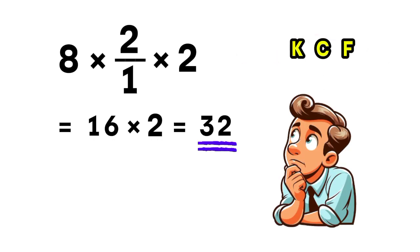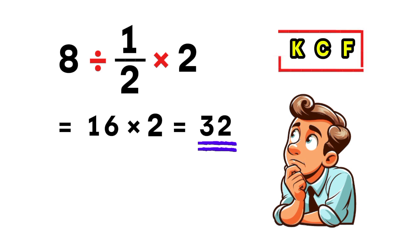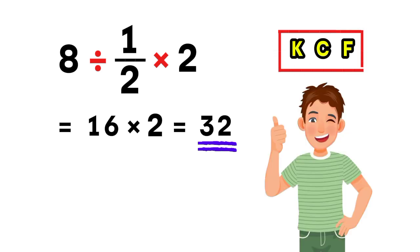So remember: when you see both division and multiplication in the same problem, always work from left to right, and use keep, change, flip whenever you're dividing by a fraction. That's how you avoid those easy-to-miss mistakes.